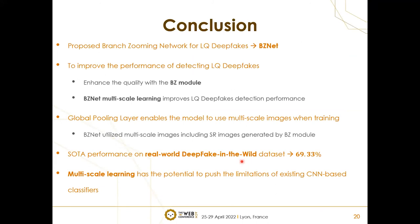To conclude, we propose the Branch Zooming Network, which uses n different branches to enhance low-quality images and then utilizes those images to train our classifier. This is made possible thanks to the global pooling layers of recent CNN-based models, which allow training with multi-scale images. Our model was the best performer on the real-world Deepfake in the Wild dataset, even without knowing which generation method was used. Multi-scale learning is a new area with strong potential to push the limitations of deepfake detection.